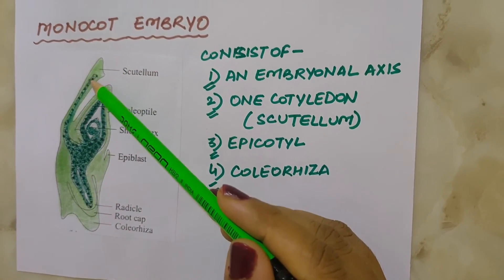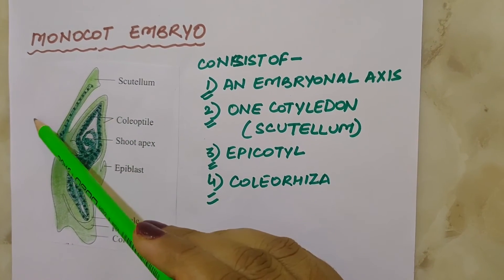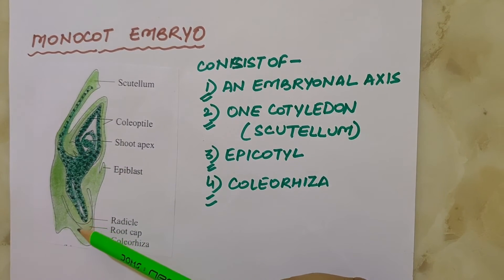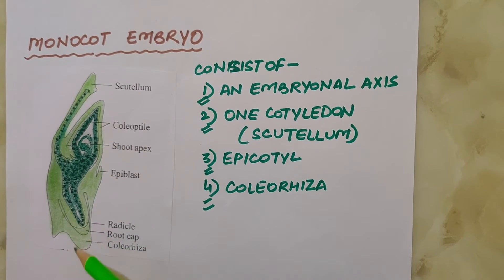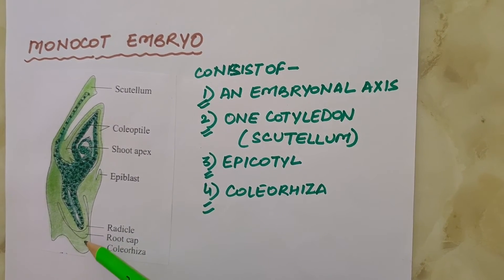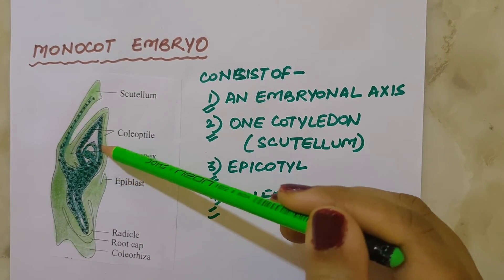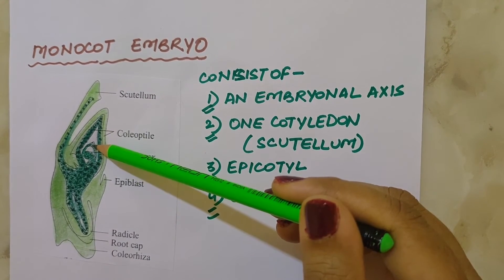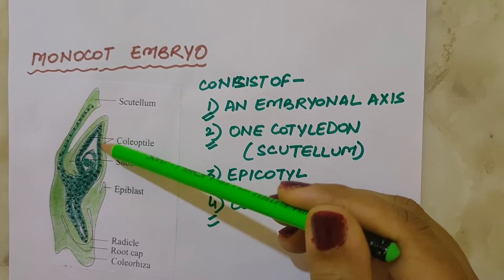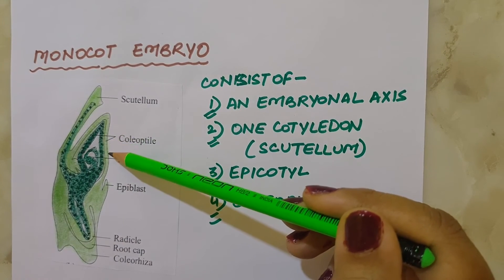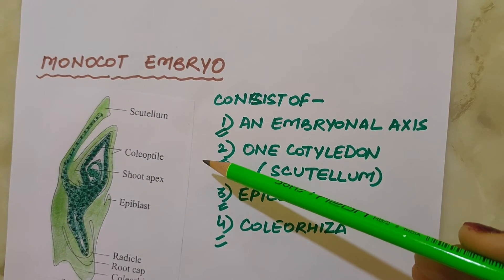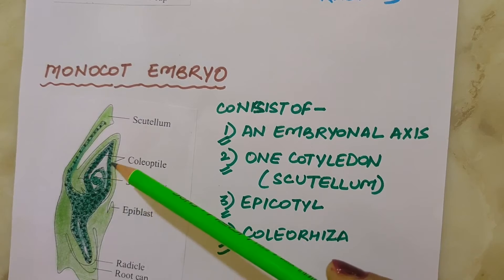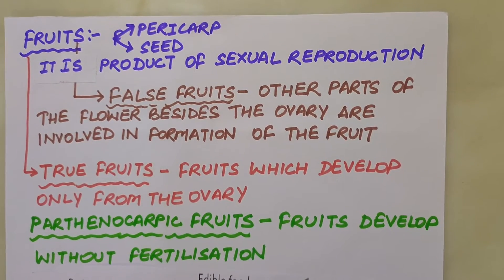Embryos of monocots possess only one cotyledon. In the grass family, the cotyledon is called the scutellum, situated towards one side (lateral) of the embryonal axis. At its lower end, the embryonal axis has the radicle and root cap enclosed in an undifferentiated sheath called the coleorhiza. The portion of the embryonal axis above the level of attachment of the scutellum is the apicotyl, which has the shoot apex and a few leaf primordia enclosed in a hollow foliar structure called the coleoptile. In monocot plants, the first shoot that emerges from the seed is the apicotyl, from which the first shoot and leaves emerge.